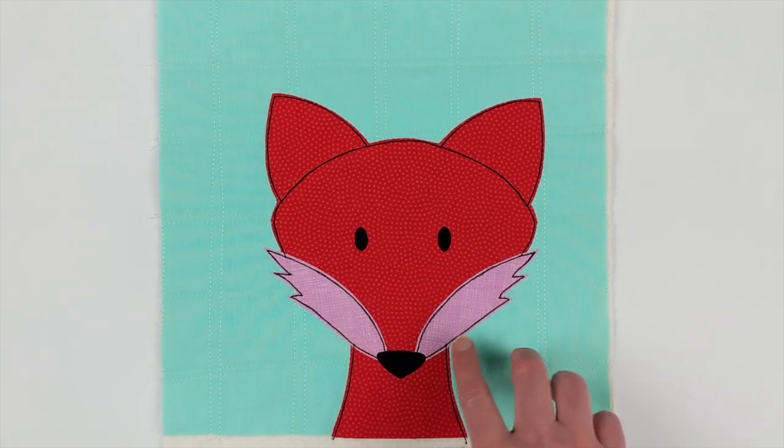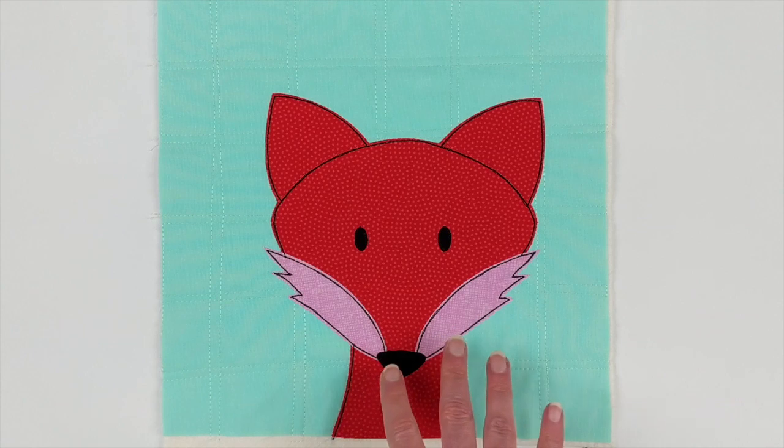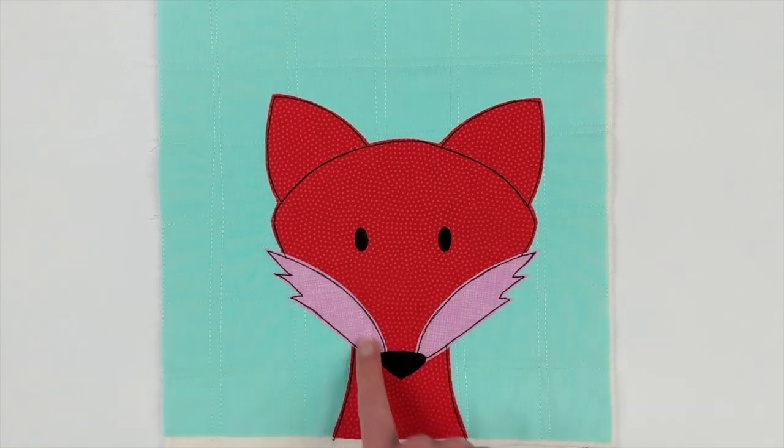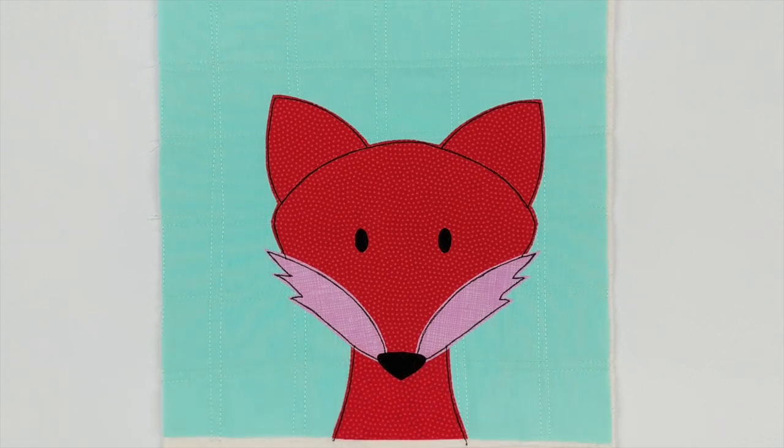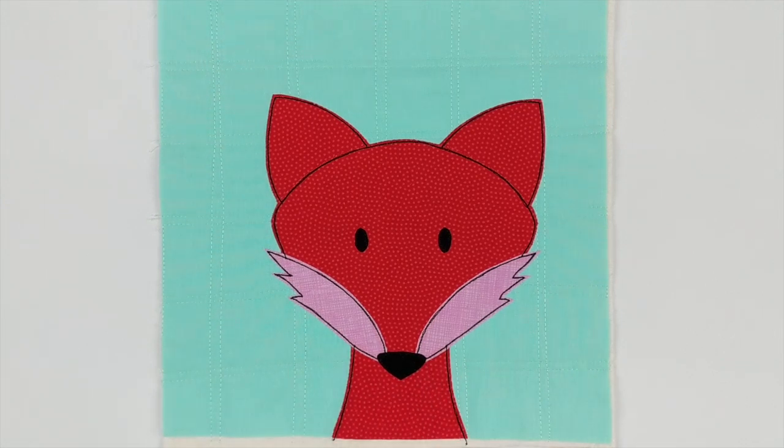If you did a light colored fox with dark colored whiskers, it would just kind of look like a weird mustache. It's not going to have that foxy look. So you can do any colors you want. I just wanted to show you the red one as a slightly playful version of that same block.